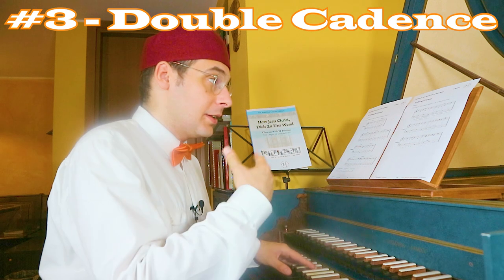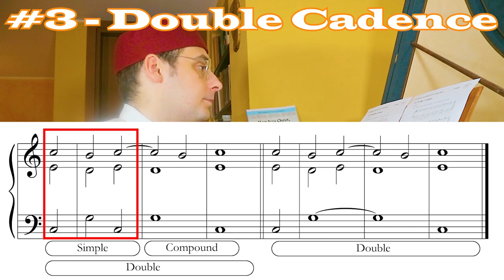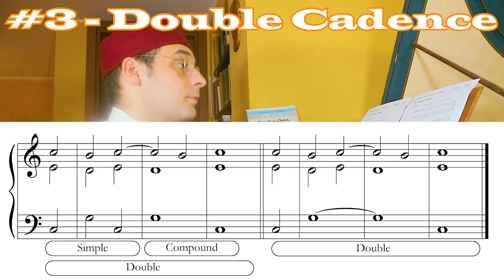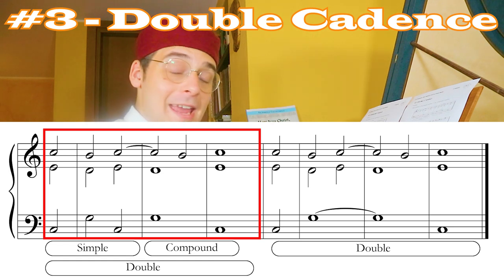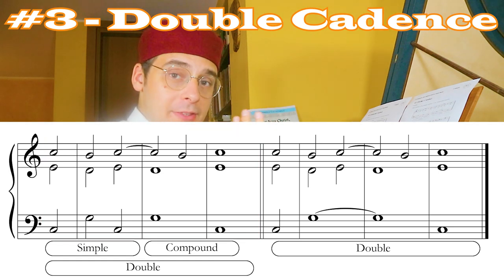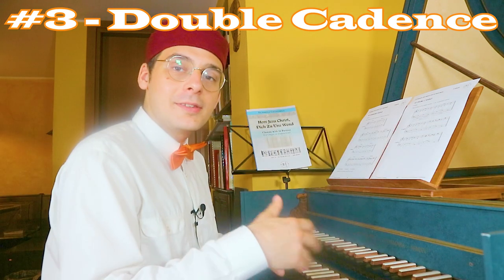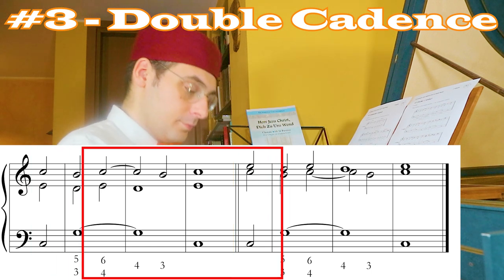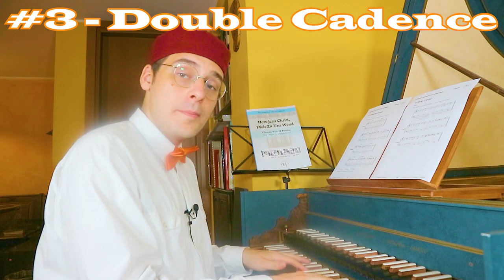The third cadence is the double cadence. The double cadence is composed of the simple cadence plus the compound cadence. In the double cadence we have a long fifth degree bass. Now let's see the major mode, and now the minor mode.